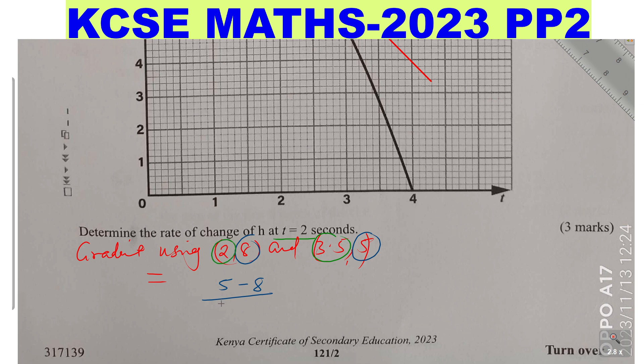This will give negative 3 divided by 1.5. This will be 1.5. When you divide this, you'll get negative 2.